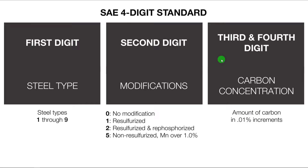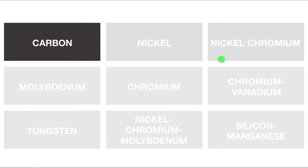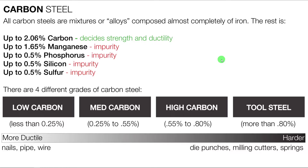Now in this video I want to focus on just carbon steel, and I want to delve into the properties of this particular material, which is number one. Carbon steel is basically a mixture or alloy that's almost completely made up of iron. It has up to 2.06% carbon and up to 1.65% manganese, as well as a couple other impurities, which means that carbon steel is about 98% iron.